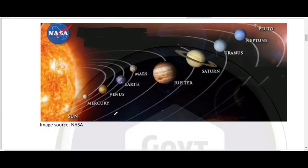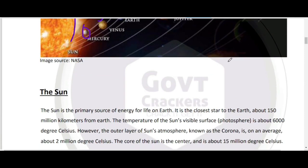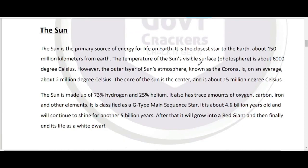यहाँ पर पूरे solar system को describe किया गया है जहाँ sun clearly दिख रहा है, फिर Mercury, Venus, Earth, Mars, Jupiter, Saturn, Uranus, Neptune, और last में dwarf planet Pluto आपको showcase होगा। सबसे पहले sun से related important information discuss करते हैं।